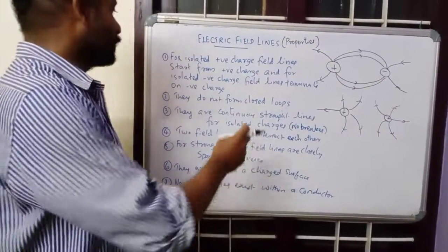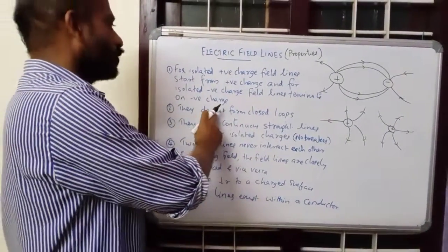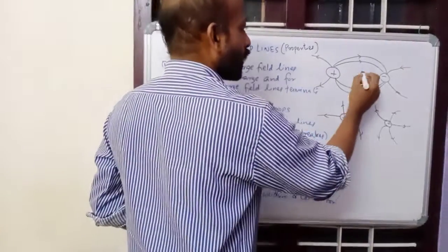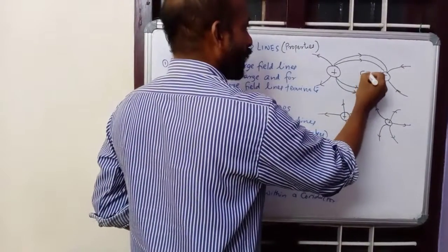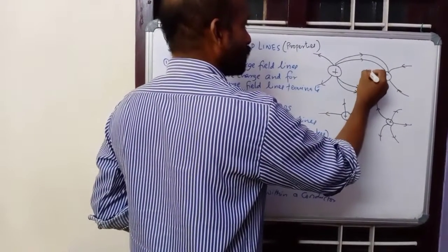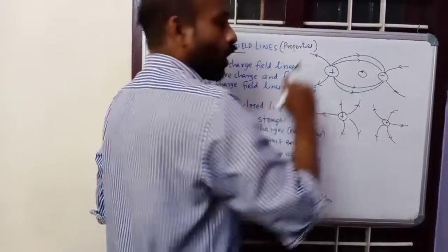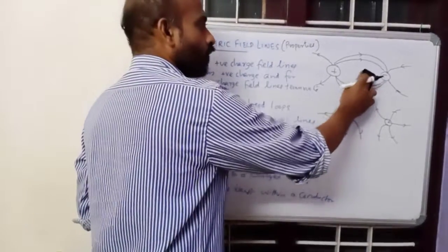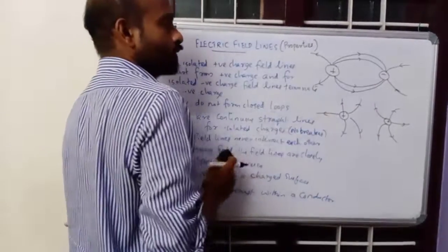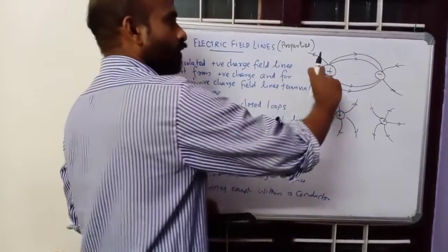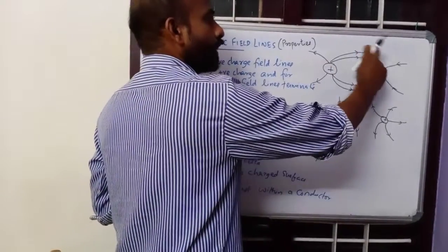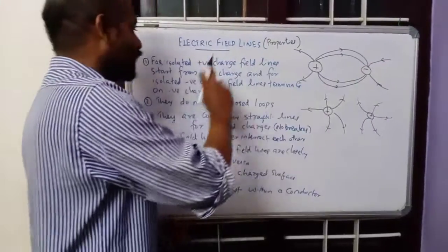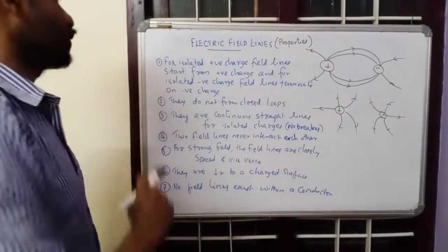Another property is that field lines do not form closed loops. If you draw a closed loop, that is wrong. Electric field lines cannot form closed loops — they start from positive and terminate on negative, and they cannot come back.